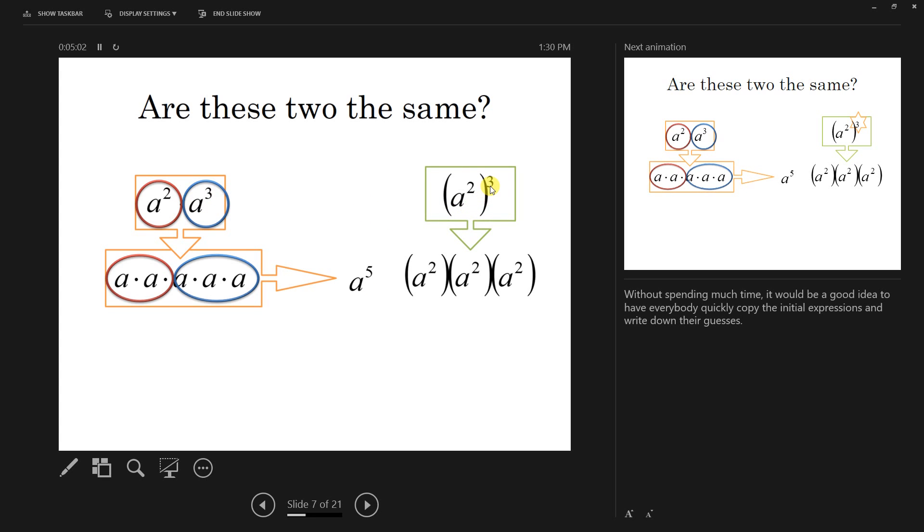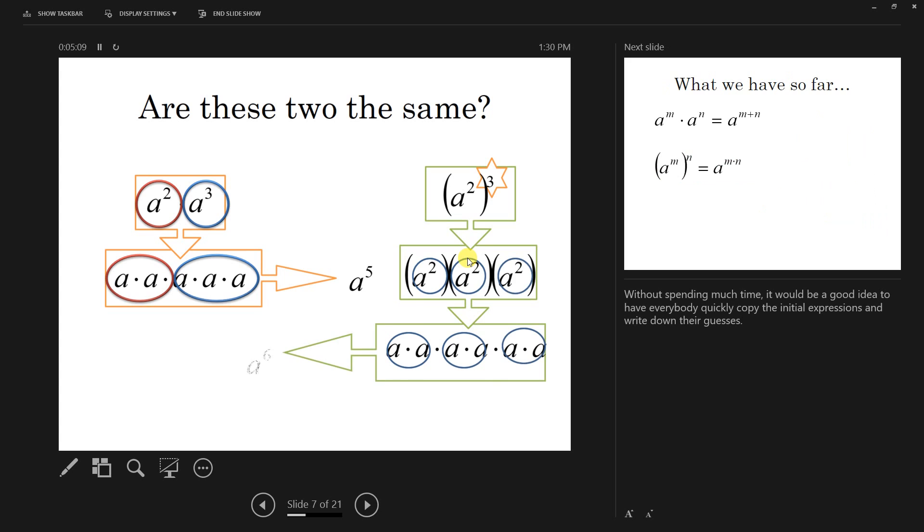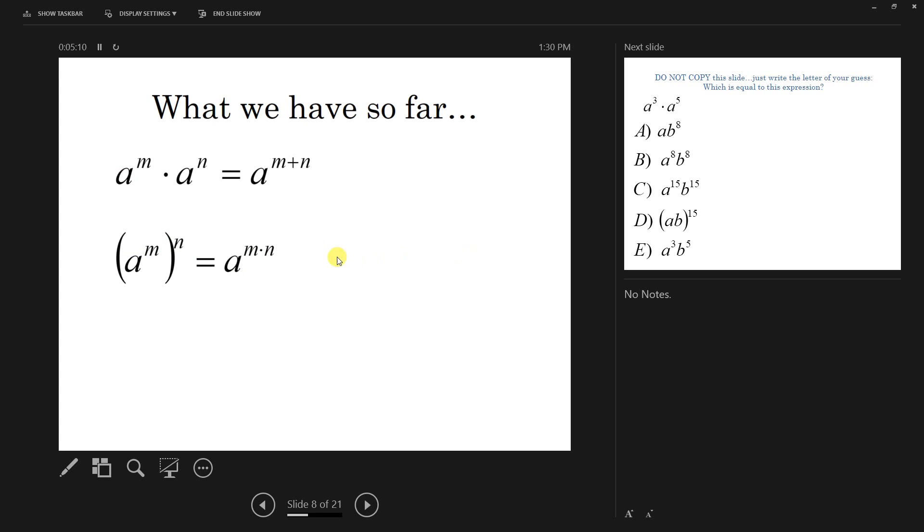And over here, we see we have three groups of a squared, and you can kind of lead up to how that means the shortcut would be that you multiply, which is what we see on the next slide.